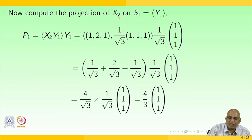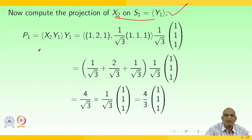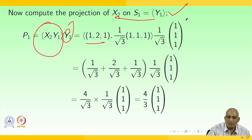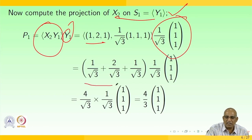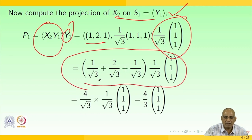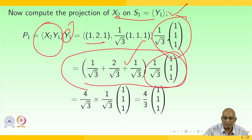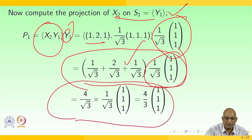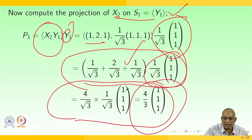Now compute the projection p₁ of x₂ onto the span of y₁. So p₁ = ⟨x₂, y₁⟩ y₁. Here x₂ = [1, 2, 1] and y₁ = (1/√3)[1, 1, 1], so ⟨x₂, y₁⟩ = 1/√3 + 2/√3 + 1/√3 = 4/√3. Multiplied by y₁ = (1/√3)[1, 1, 1], we get p₁ = (4/3)[1, 1, 1].